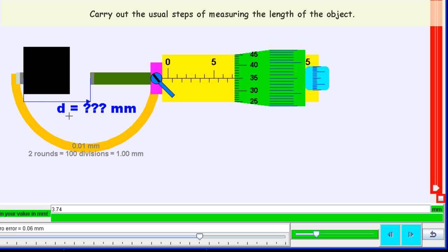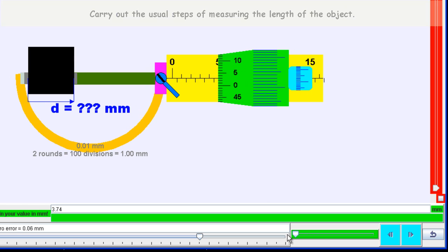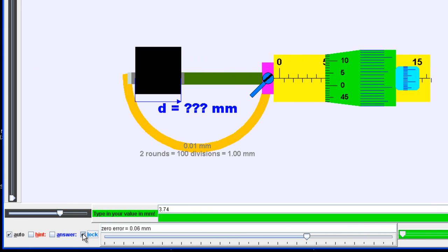Carry out the usual measurement, and you will find that the new reading in this case would be 5.03 mm.